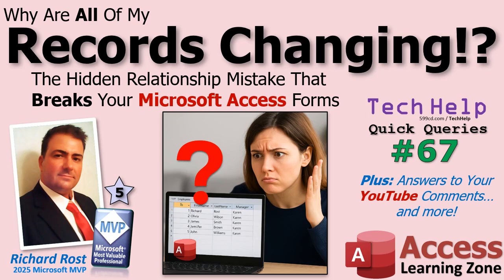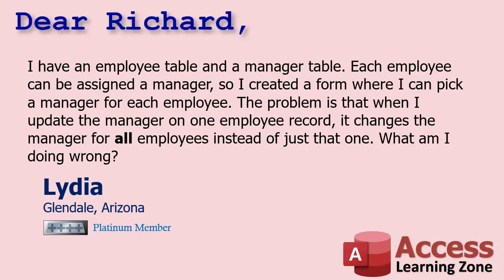We've got answers to your questions from YouTube and more — let's get into it. First up we've got a question from Lydia from Glendale, Arizona, one of my platinum members. Lydia says: I have an employee table and a manager table. Each employee can be assigned a manager, so I created a form where I can pick a manager for each employee. The problem is that when I update the manager on one employee record, it changes the manager for all employees instead of just that one. What am I doing wrong?